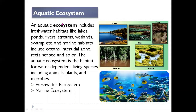The aquatic ecosystem includes freshwater habitats like lakes, ponds, rivers, streams, wetlands, swamps, and marsh areas. In the freshwater aquatic ecosystem the focus is on fresh water, as opposed to saltwater or marine water.